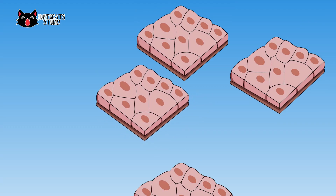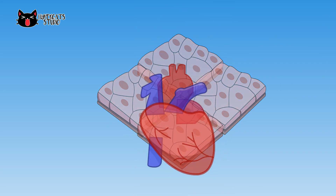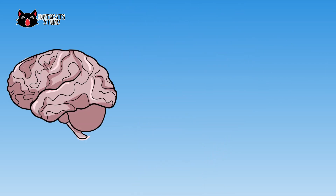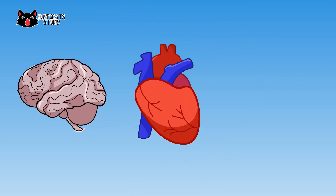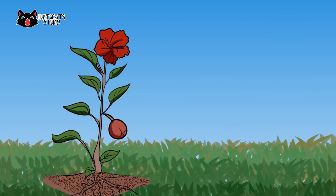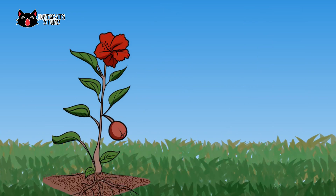Tissues with the same functions will combine and form an organ. Examples of organs of animals are the brain, heart, and lungs. Flowers, roots, stems, and leaves are some of the organs of plants.